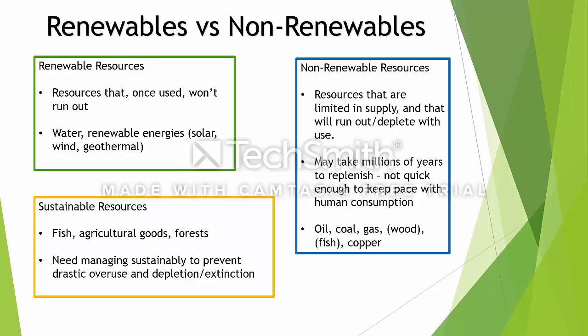Non-renewable resources are ones that are limited in supply and will run out or deplete with use over time. Fish can be classed as non-renewable if unsustainably managed. But things like oil, coal, gas, and copper are the standard non-renewable resources — if we keep using them at the current rate, they will eventually run out. Technically they take millions of years to replenish, but given the pace of human consumption, they are essentially non-renewable. In economics, we study things within a reasonable human timescale, so from that perspective they are non-renewables.